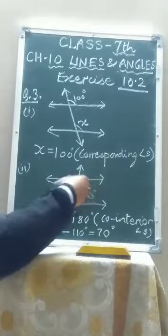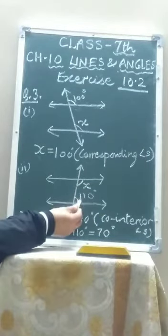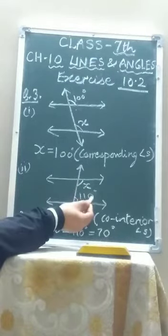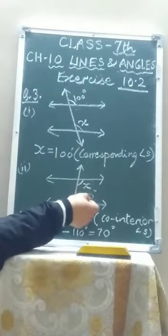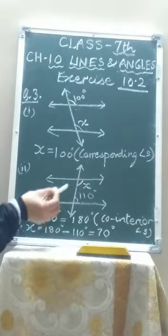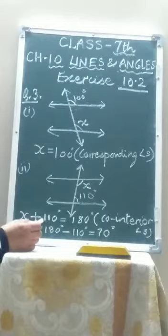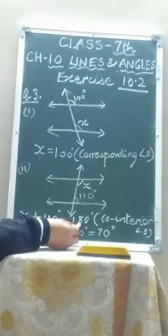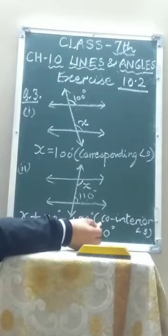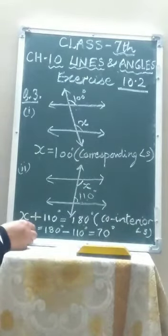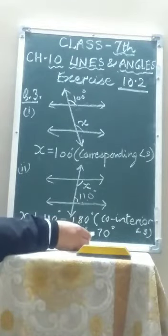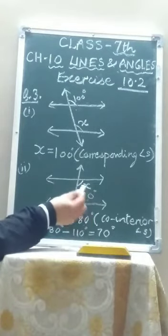Now second part: these two are parallel lines and this is the transversal. This angle is 110 degrees and the unknown angle is x. They are lying on the same side of the transversal but below the first line and above the second line. These types of angles are called co-interior angles, and the sum of co-interior angles is 180 degrees. That means x plus 110 equals 180 degrees — they are co-interior angles. So x equals 180 minus 110, which is 70 degrees.